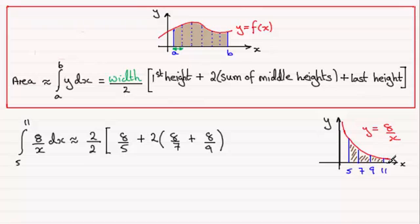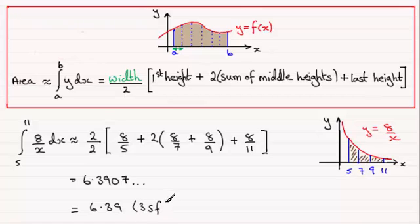Now it's plus the last height. So you just substitute when x is 11 into here, and you're going to get plus 8 elevenths. So just a question of getting on your calculator and working that out. When you do that, you should find that your answer is 6.3907 and so on. And if we round this to three significant figures, this is going to be 6.39 to 3SF.